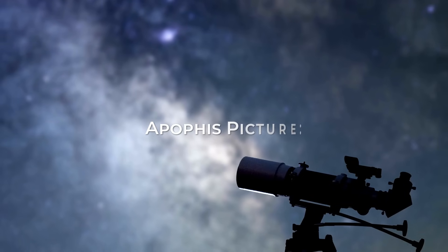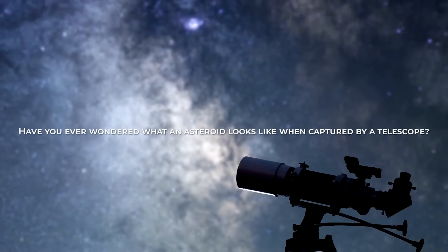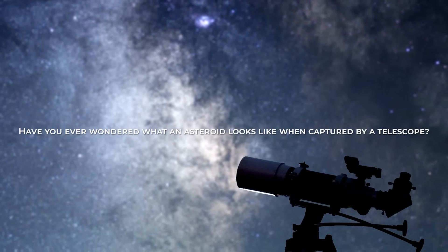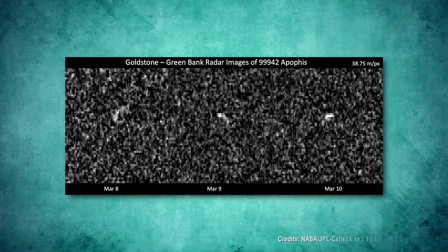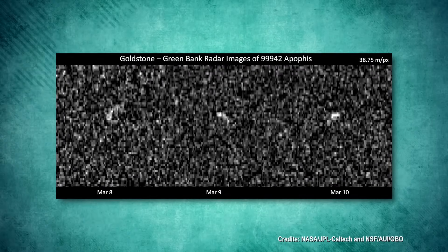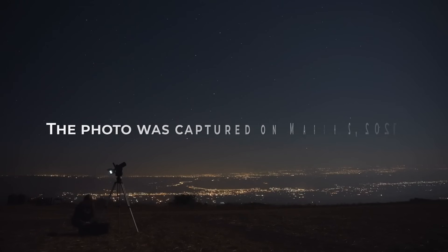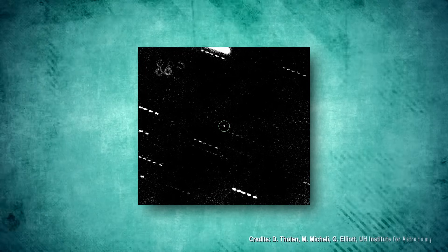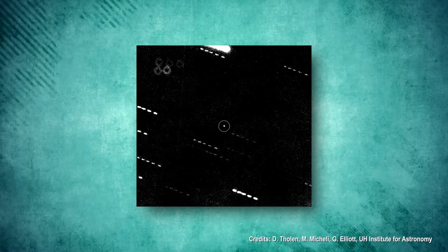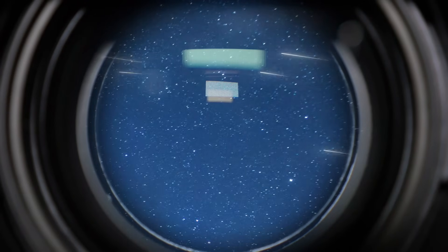Have you ever wondered what an asteroid looks like when captured by a telescope? Check out this picture of the dangerous asteroid Apophis taken by the Virtual Telescope Project in Rome, Italy. The photo was captured on March 2, 2021. In the image, the asteroid appears as a small dot, while the surrounding stars appear as streaks. This is because the telescope was following the asteroid's movements through space.